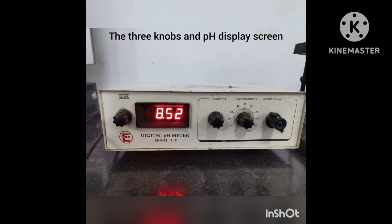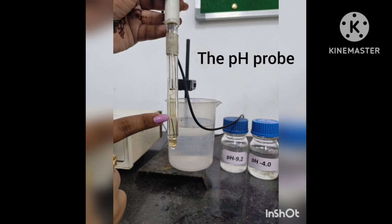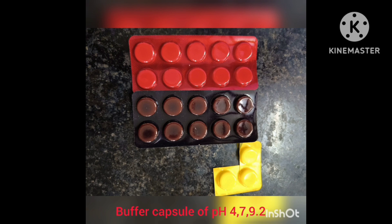A pH meter is essentially a voltmeter with high input impedance which measures the voltage of an electrode sensitive to the hydrogen ion concentration relative to another electrode which exhibits a constant voltage.